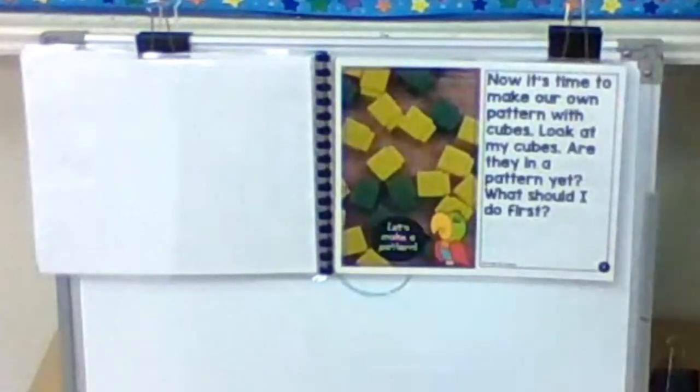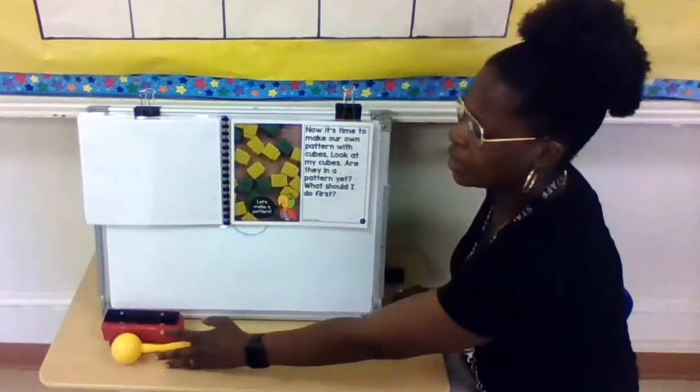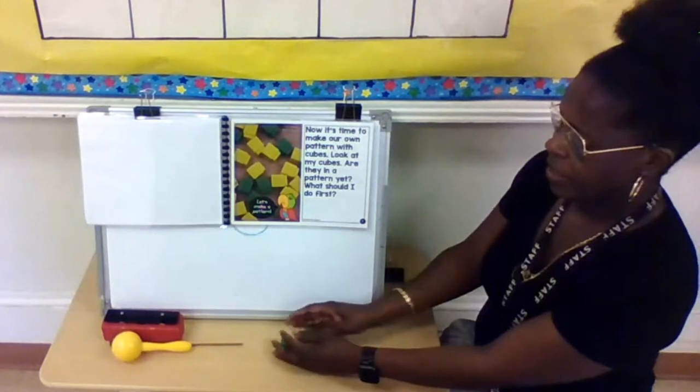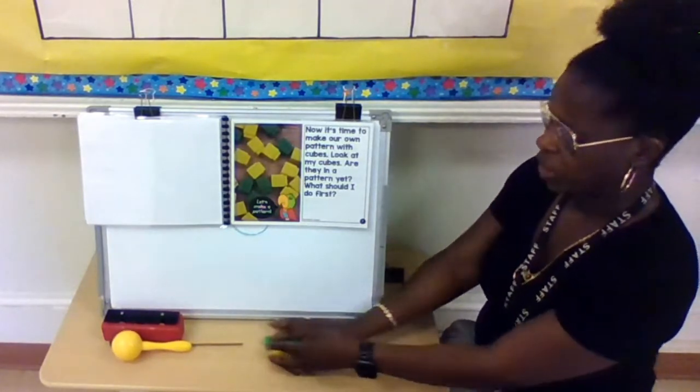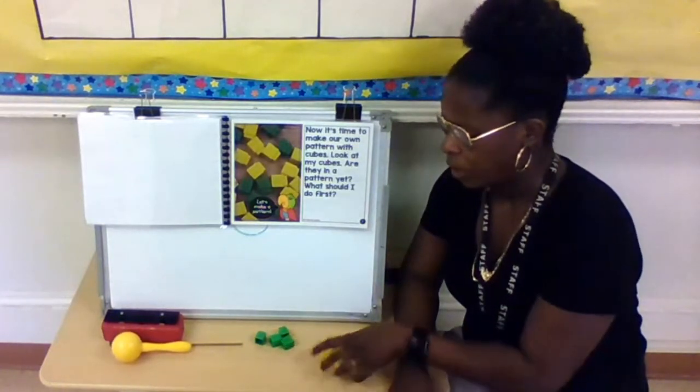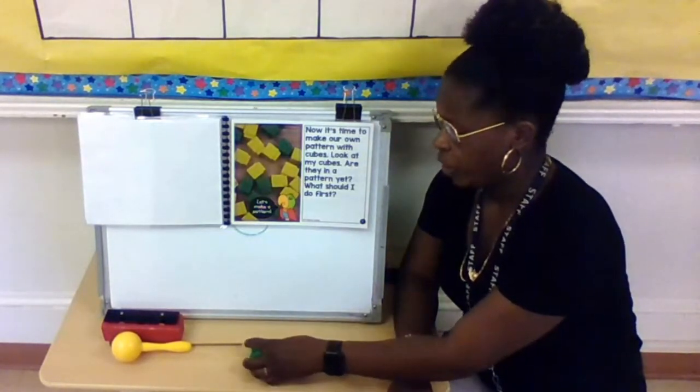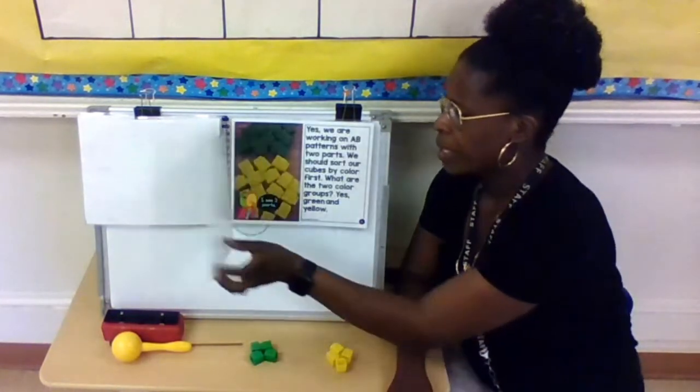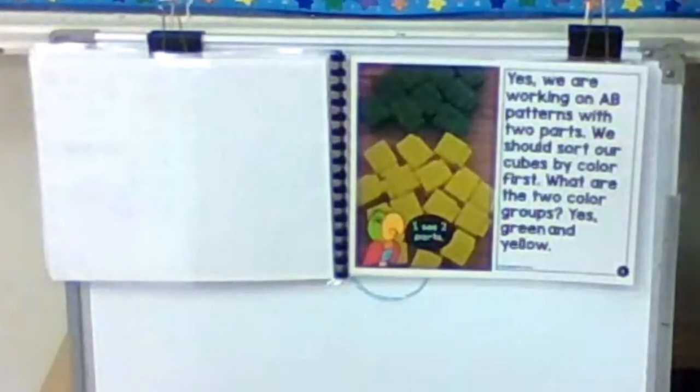Now it's time to make our own pattern with cubes. Look at my cubes. Look at these cubes right here. Are they in a pattern yet? Right? No, right now they're just scattered all over the place. They're not in a pattern. What should I do first? So if you want to make a pattern, what do you think we should do first? Maybe we should sort them, right? So I have some cubes here and I'm going to take them and they're right now looking just like the picture. They're scattered, right? And I'm going to sort them so it'll be easier for us to make our patterns. I'll put all the yellow together and all the green together, right?